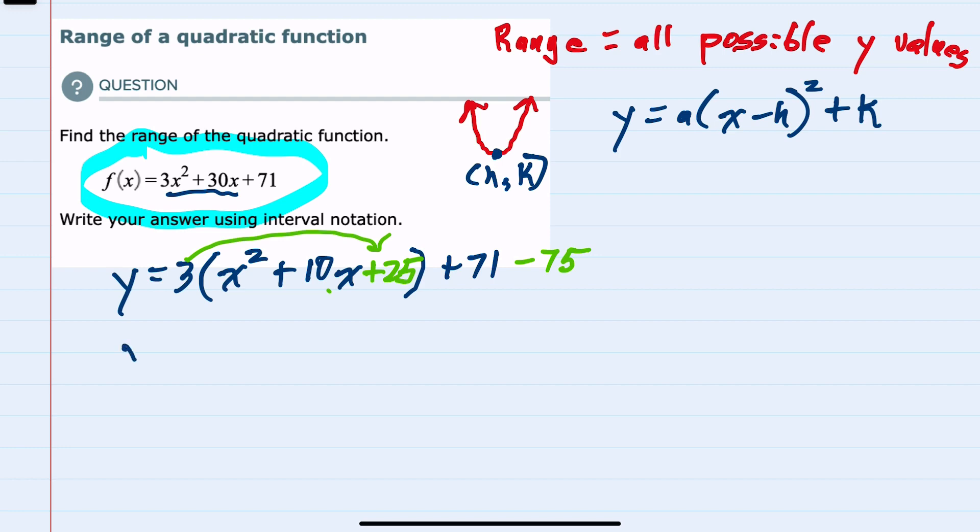From here I can rewrite the x² + 10x + 25 as (x + 5)². That's the perfect square that I got from completing the square. And then outside of the parentheses, the 71 - 75 would be -4.